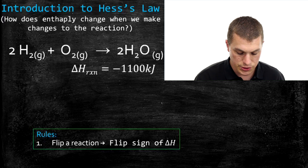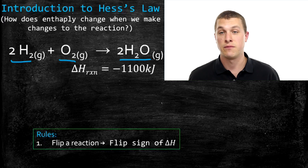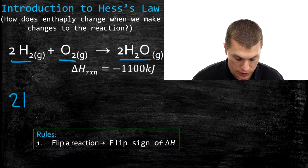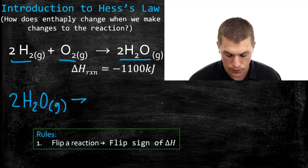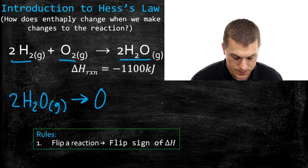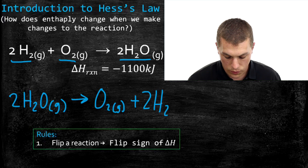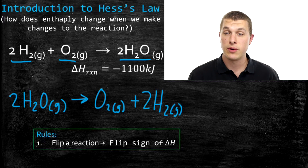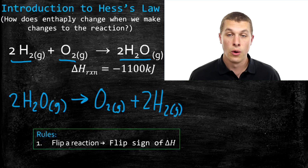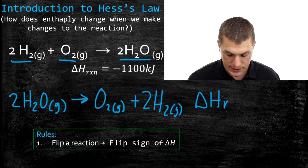In this case, we have the reaction two hydrogen gas plus one oxygen gas goes to two waters. We can flip that reaction around. So instead of making water, we're going to break water apart. We start out with our water and take that to oxygen gas and hydrogen gas. So we've just flipped the process — we were making water, now we're splitting water apart. When we initially ran that reaction, it gave off 1100 kilojoules of energy. When we run it in reverse, the new enthalpy of reaction is exactly the same except the sign is flipped.